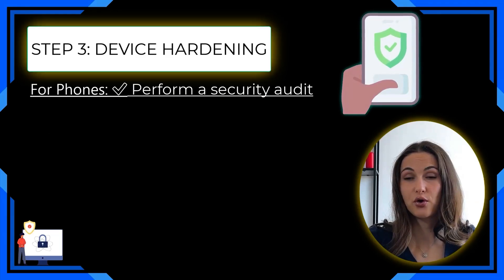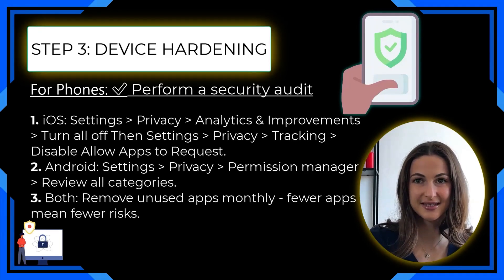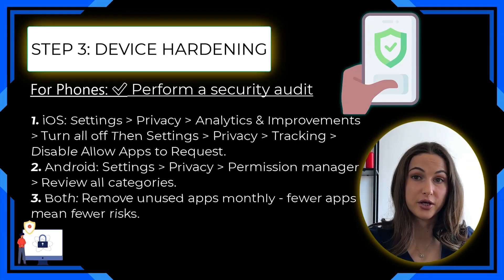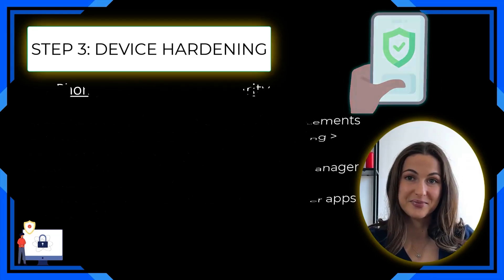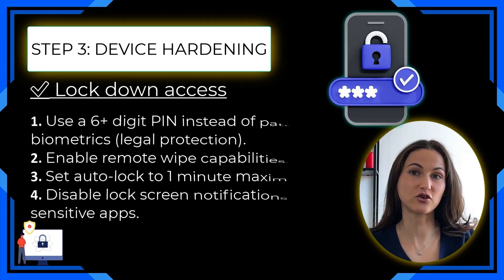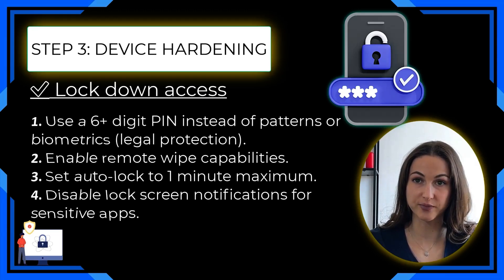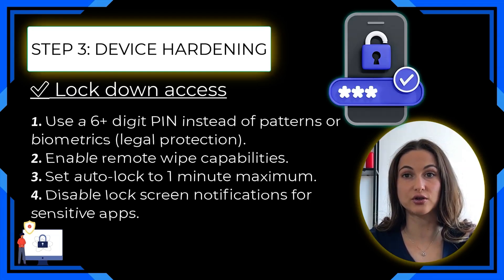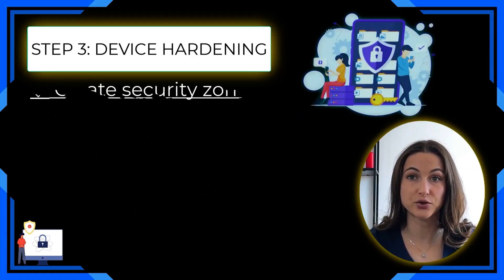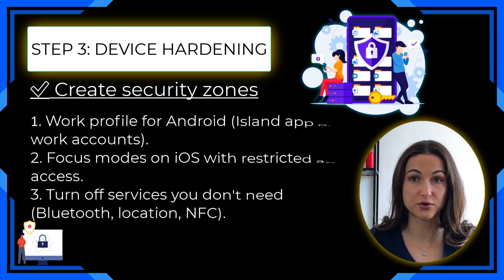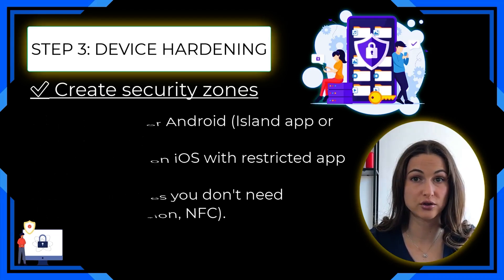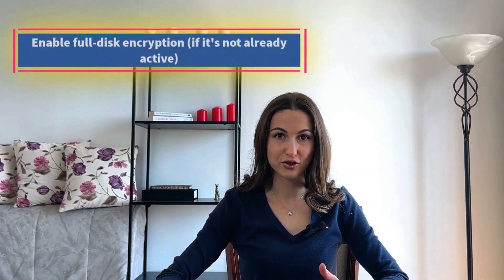For phones, perform a security audit — follow the recommended settings for iOS and Android. Remove unused apps monthly; fewer apps mean fewer risks. Use a six-digit PIN instead of patterns or biometrics for legal protection. Enable remote wipe capabilities, set auto-lock to one minute maximum, and disable lock screen notifications for sensitive apps. Create security zones using work profiles on Android or focus modes on iOS with restricted access. Turn off services you don't need, like Bluetooth, location, and NFC. Your immediate action item: enable full encryption today if it's not already active.